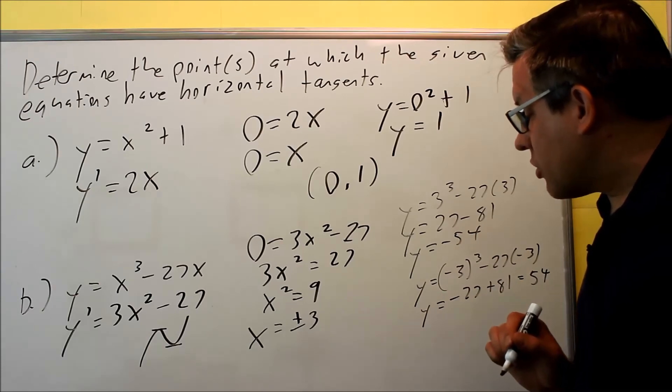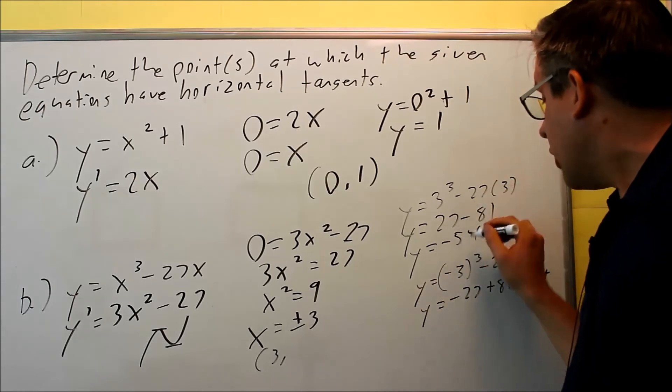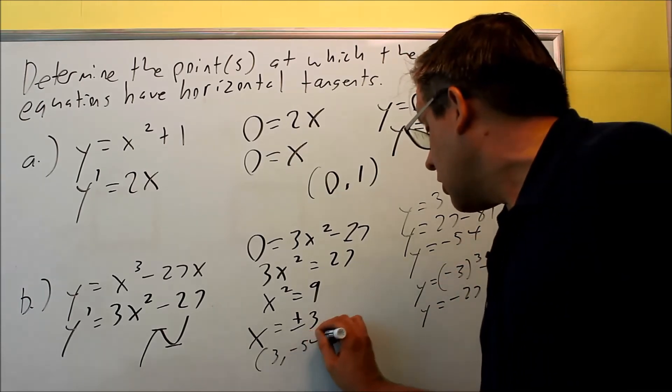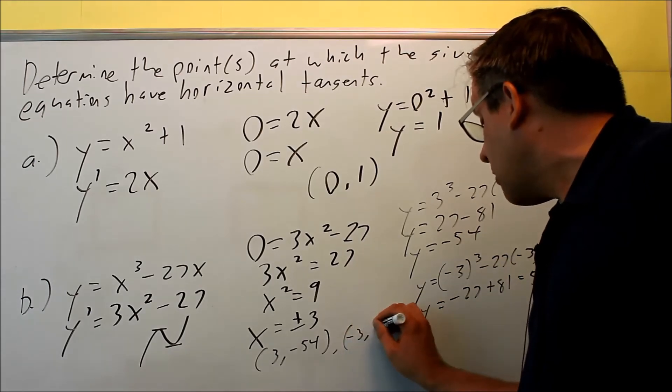So how do you write your answer? You'll write your answer as 2 points. You'll write it as 3 comma negative 54, and when we put in negative 3 we got positive 54.